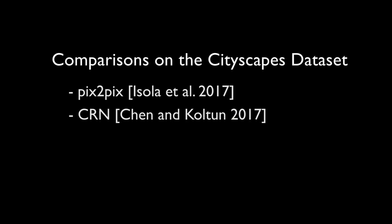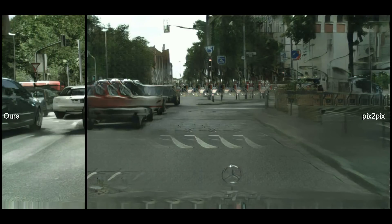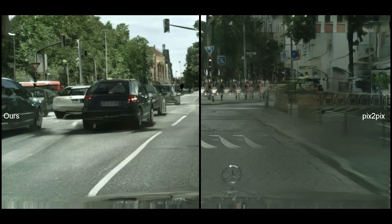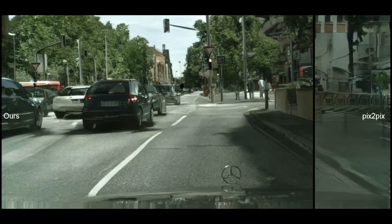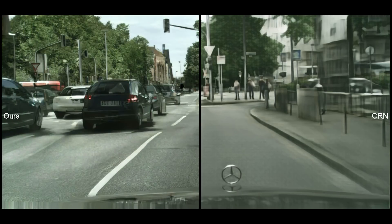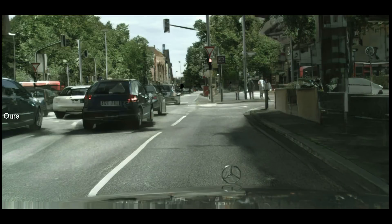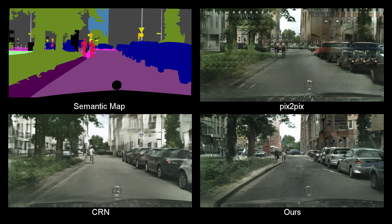We show comparisons with state-of-the-art image synthesis methods, Pix2Pix and CRN. We first show side-by-side comparisons along with a semantic map, then we switch between results from different methods — first Pix2Pix vs. our method, then CRN vs. ours. For the rest of the examples, we only show switches between CRN and our results.